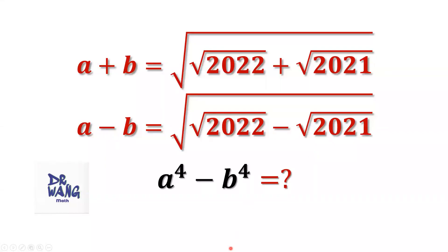Hello, everyone. I'm Dr. Wen. Here is the question: If A plus B is given, and A minus B is also given, what is the value of A to the power of 4 minus B to the power of 4?